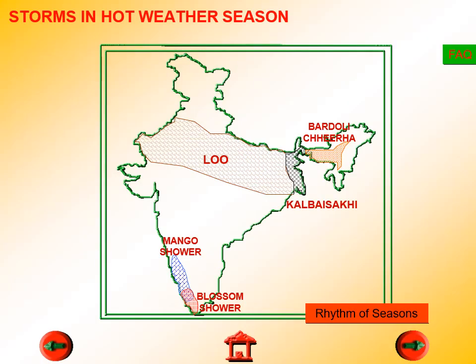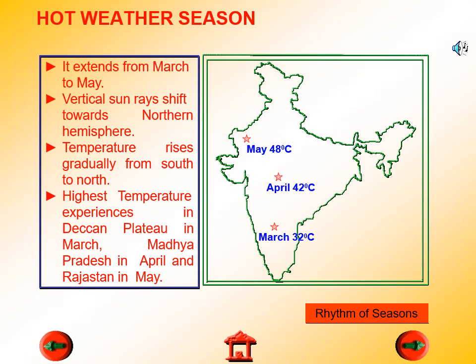To recap the three particular weather features: the Loo occurs in the northern and northwestern parts; Kal Baisakhi in the eastern part; and mango showers in Kerala and Karnataka. The hot weather season extends from March to May. Vertical rays of the sun shift towards the northern hemisphere, and temperature rises gradually from south to north. Highest temperatures: Deccan Plateau in March around 38 degrees; Gujarat and Madhya Pradesh in April around 42 degrees; Rajasthan around 45 to 48 degrees in May.